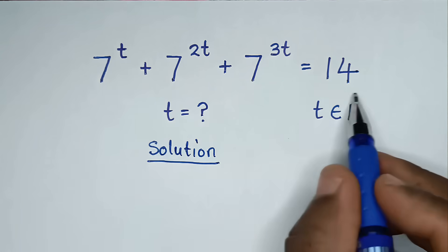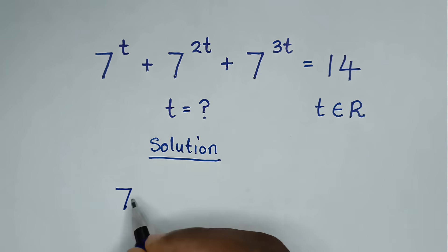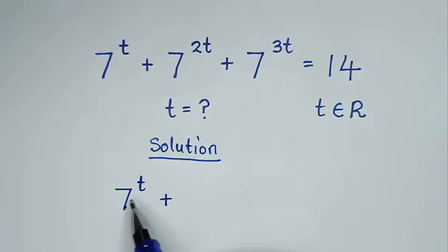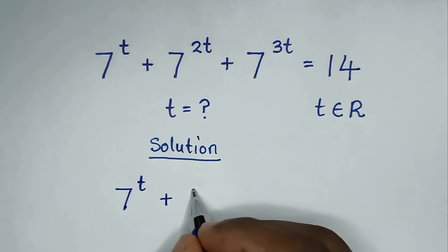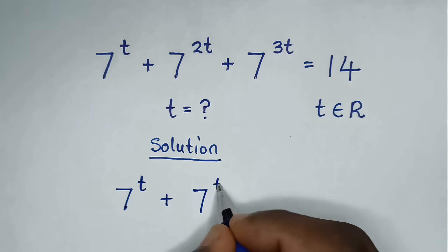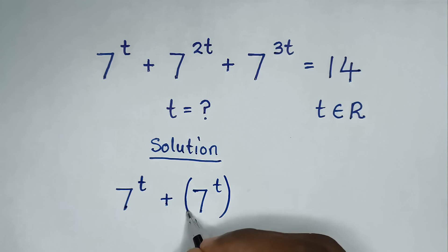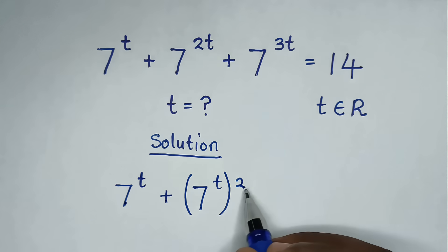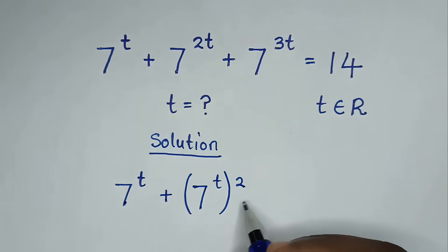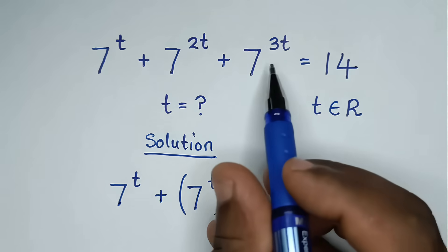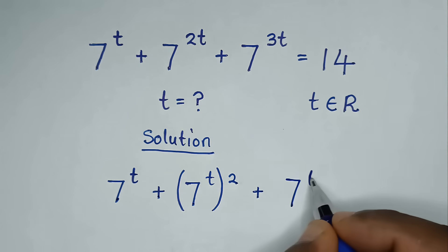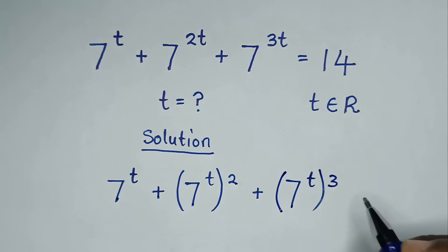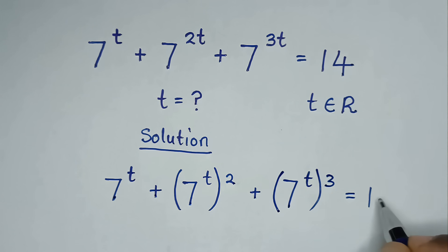From our problem, which is 7 power of t plus 7 power of 2t, we note that 7 power of 2t is the same as 7 power of t, inside the bracket, to the power of 2 outside the bracket, because t times 2 is 2t. Then, plus 7 power of 3t is the same as 7 power of t, inside the bracket, to the power of 3 outside the bracket, is equal to 14.